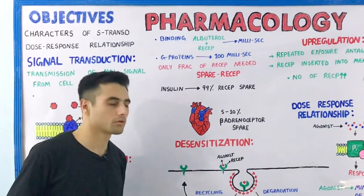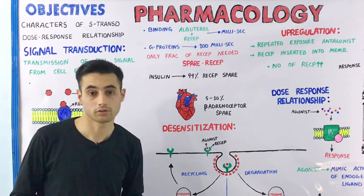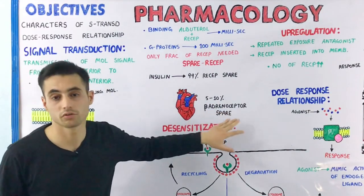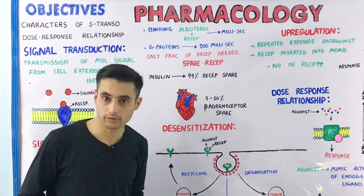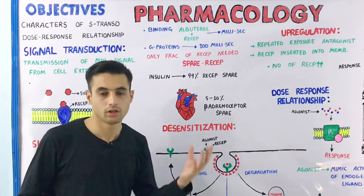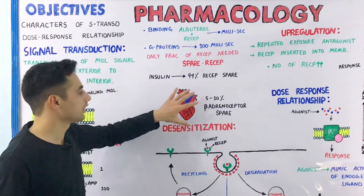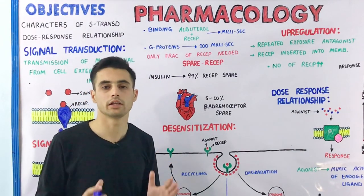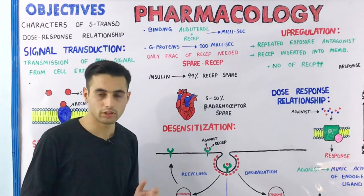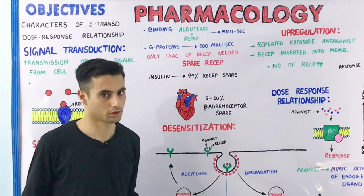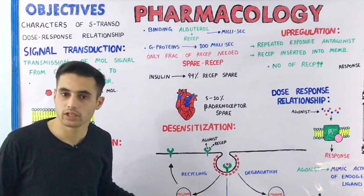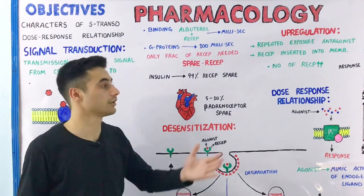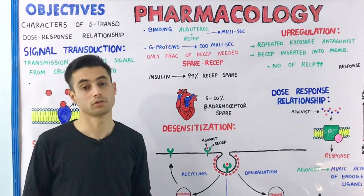Some organs in our body have 90 percent of receptors occupied. For example, only 5 to 10 percent of beta adrenoceptors are spare — 90 to 95 percent are occupied with a hormone or drug, so this organ has little functional reserve. On the other hand, insulin receptors are 99 percent spare — only one insulin binds with the receptor to produce millions of products. Signal amplification increases the efficacy and effectiveness of the cell.